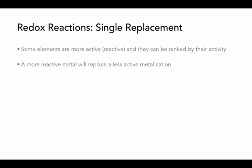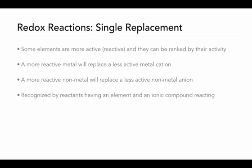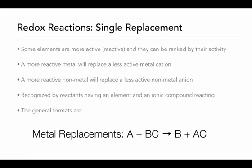A more reactive metal can replace a less active metal cation in a compound, or a more reactive nonmetal can replace a less active nonmetal anion in a compound. The easiest way of recognizing this reaction is to see that we have an element that has been uncombined with an ionic compound.